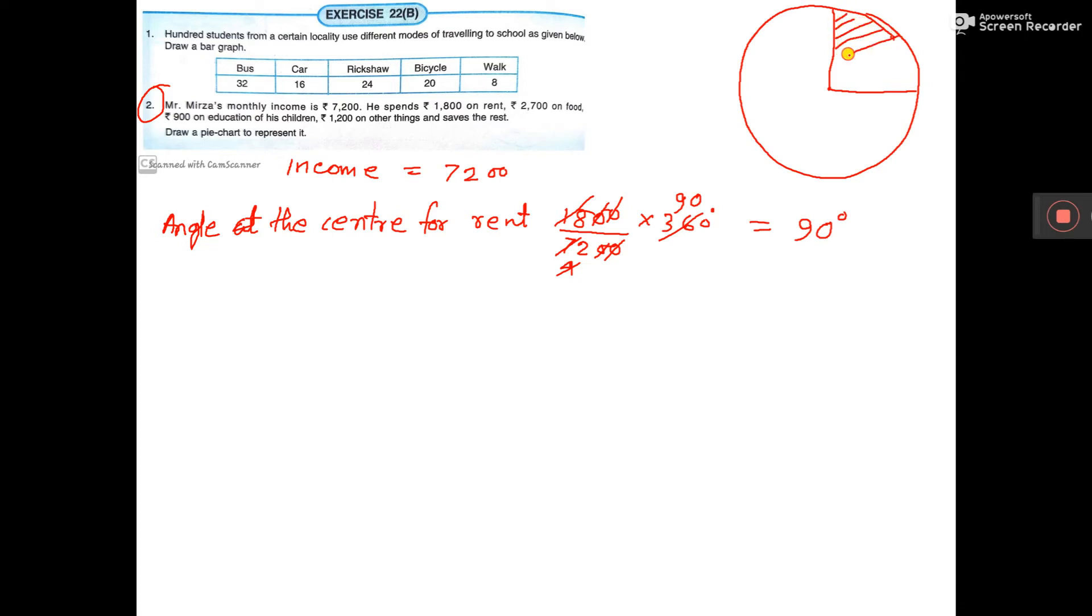This is the angle for rent. Then, angle at the center for the next item is food.